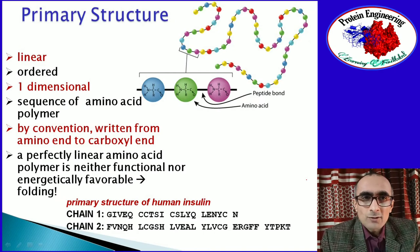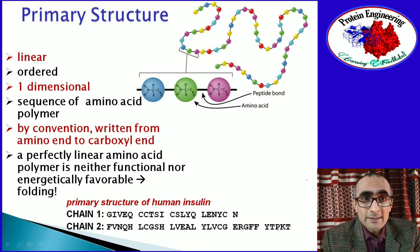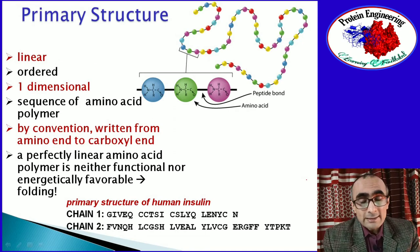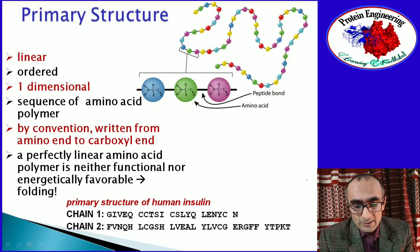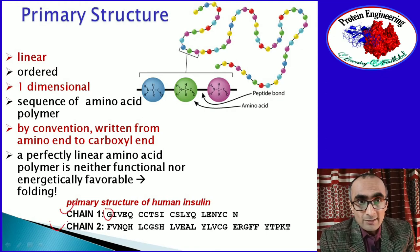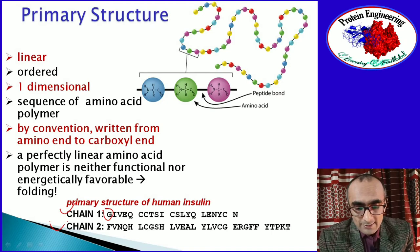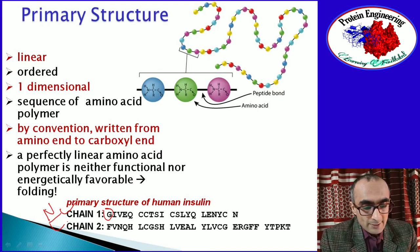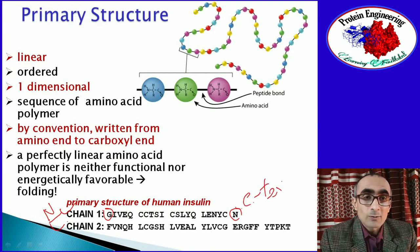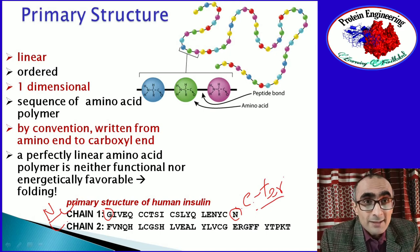The sequence of a protein is called the primary structure of the protein. This primary structure is basically linear, ordered, and one-dimensional. By convention it is written from N-terminal to C-terminal. For example, in the case of insulin it has two chains; the first amino acid of chain one is glycine, so glycine is the N-terminal amino acid. The last amino acid is called the C-terminal amino acid and will have a free carboxyl terminus.